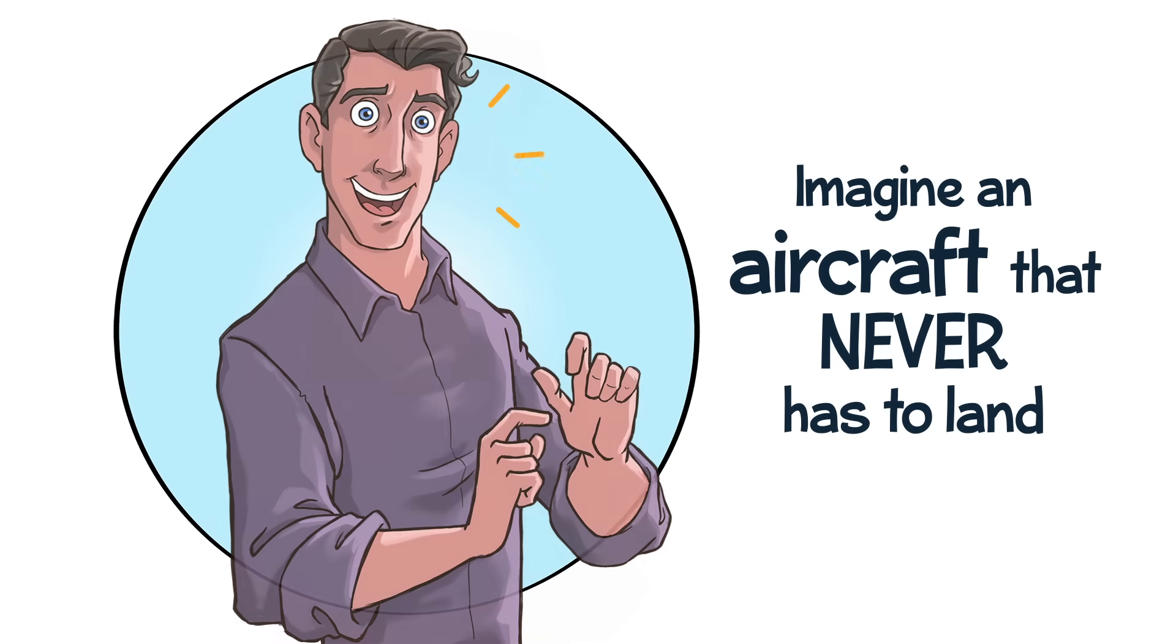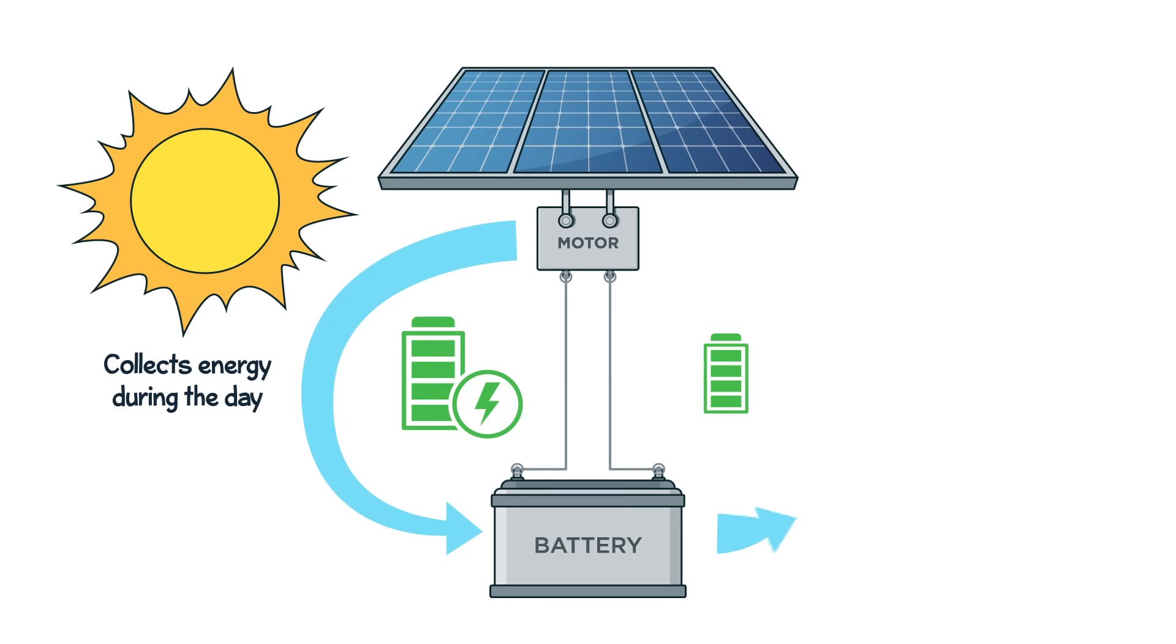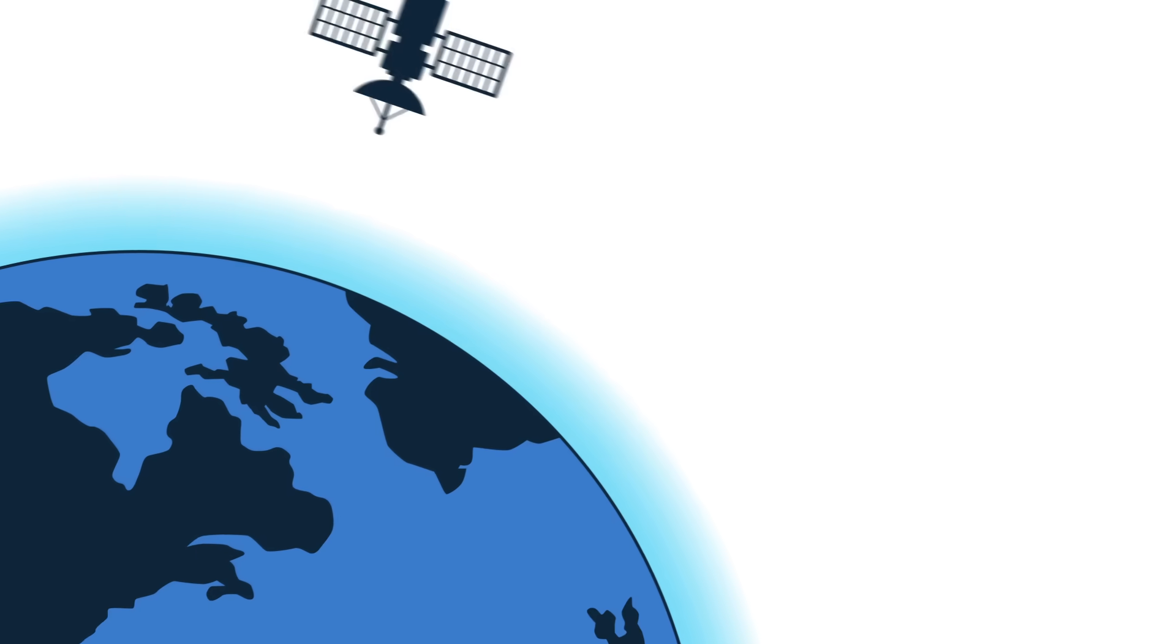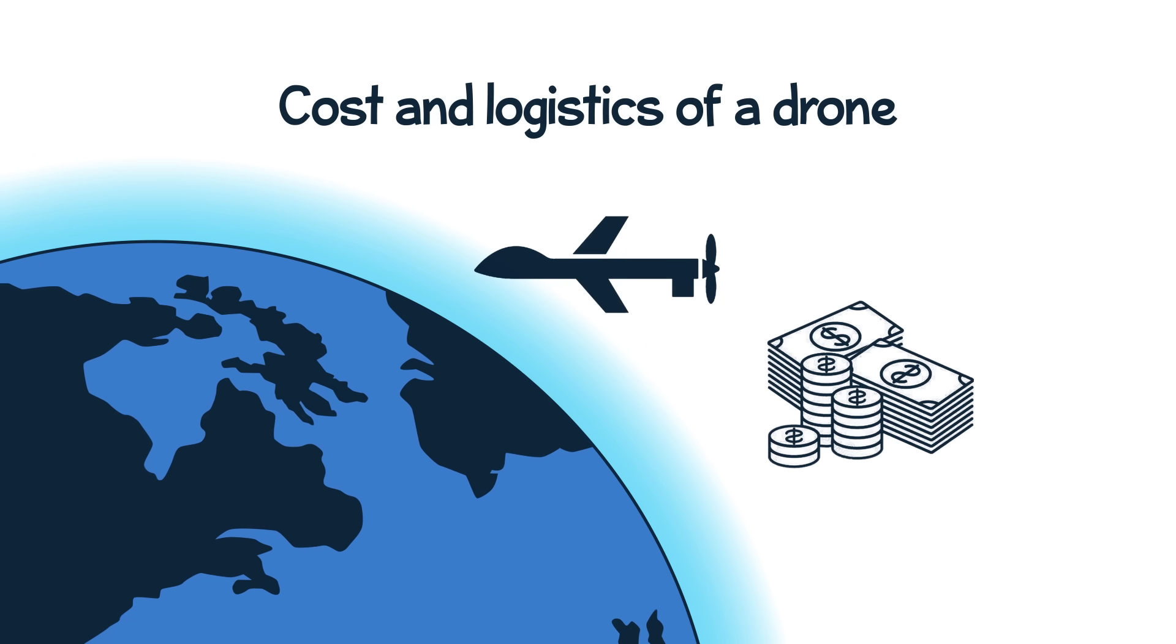Imagine an aircraft that never has to land. A solar-powered system that collects energy during the day and runs on batteries at night isn't constrained by fuel. It would live in the stratosphere, providing better capabilities than satellites, but for the cost and logistics of a drone.